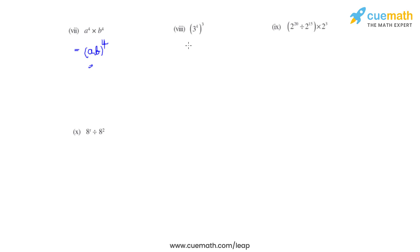In the eighth bit, we have a number 3 raised to 4, which is itself raised to another power of 3. We read it as 3 raised to 4, whole raised to 3. In this case, the powers get multiplied, so we write 3 raised to 4 times 3, giving us the answer 3 raised to 12.